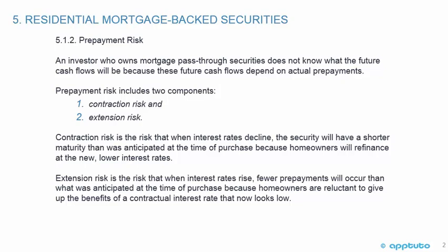Prepayment risk includes two components: contraction risk and extension risk. Contraction risk is the risk that when interest rates decline, the security will have a shorter maturity than was anticipated at the time of purchase because homeowners will refinance at new, lower interest rates.